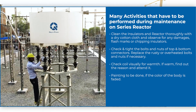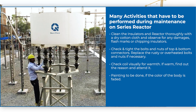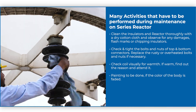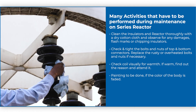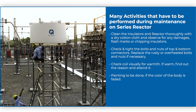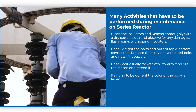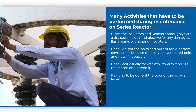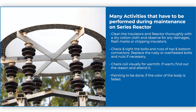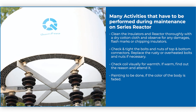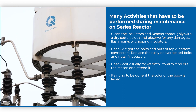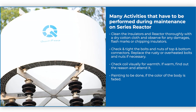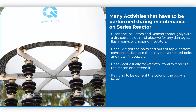Maintenance of series reactor: clean the insulators and reactor thoroughly with a dry cotton cloth and observe for any damages, flash marks, or chipping of insulators. Check and tighten the bolts and nuts of top and bottom connectors, replacing rusty or overheated bolts and nuts if necessary. Check visually for warmth; if warm, find out the reason and attend to it. Painting is to be done if the color of the body is faded.